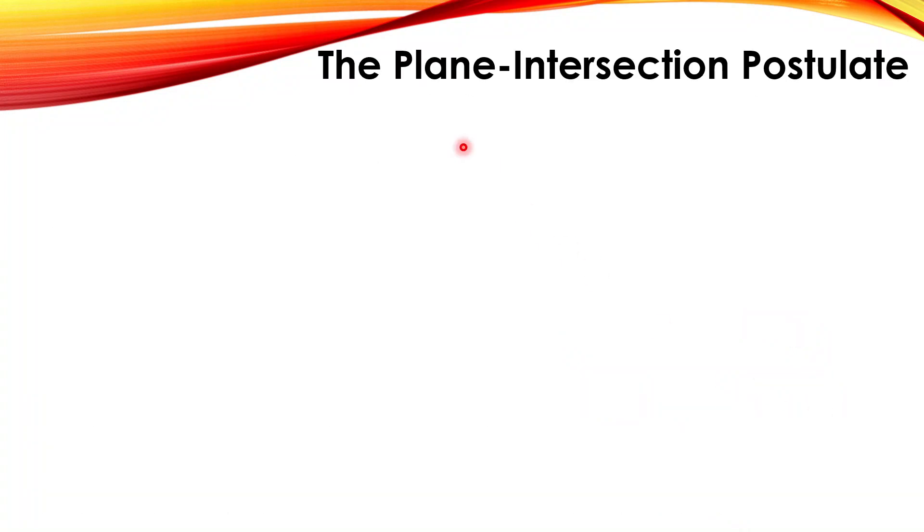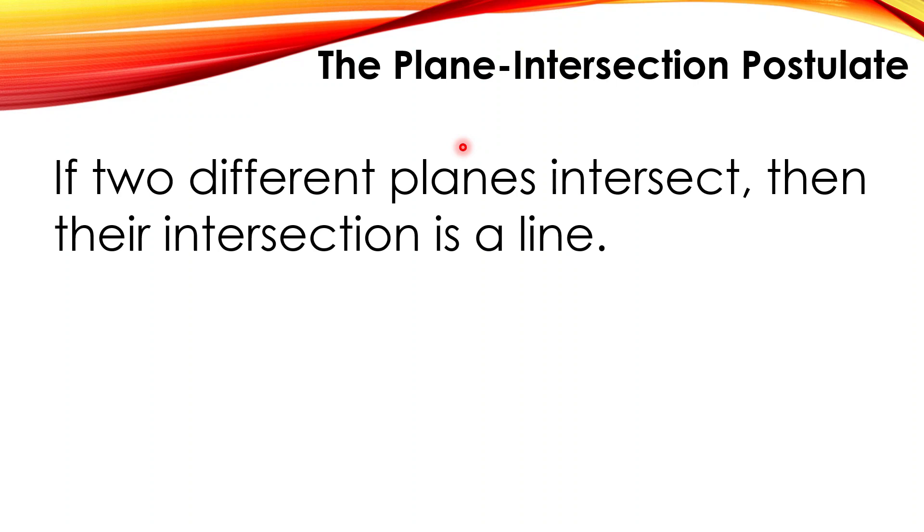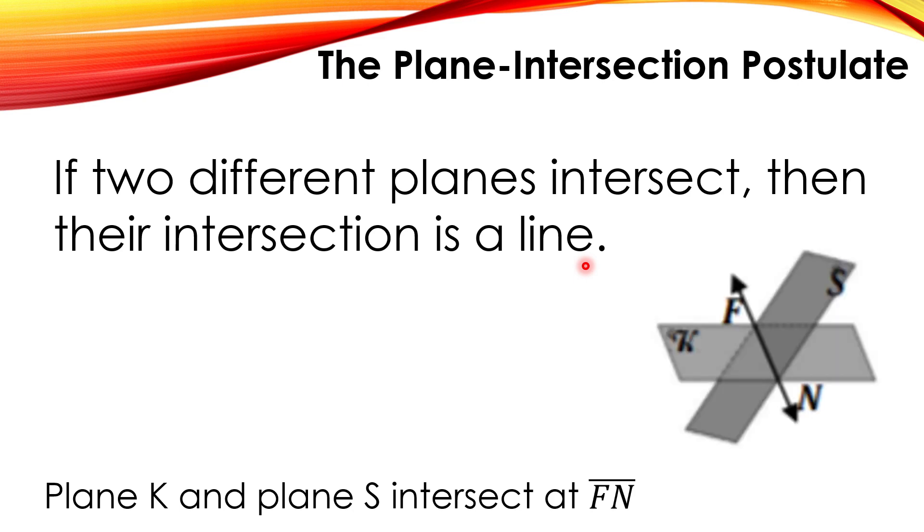Next is the plane intersection postulate. If two different planes intersect, then their intersection is a line. The plane K and plane S intersect at line FN. So we have here the plane S and the plane K intersect at line FN.